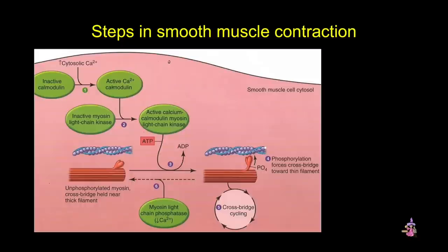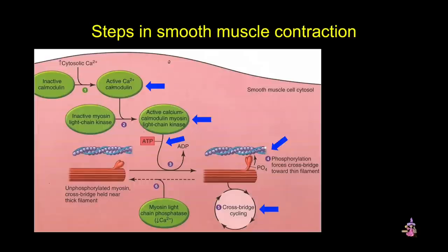Here's a cartoon showing the steps in smooth muscle contraction. First, there's an increase in cytoplasmic calcium, and that calcium binds to and activates calmodulin. Activated calmodulin then activates myosin light chain kinase by binding to it. Cross-bridge cycling can't occur until the myosin heads have been activated, and in smooth muscle the myosin light chain kinase phosphorylates myosin. As in skeletal muscle, myosin still acts as an ATPase, using it to produce a conformational change, forcing the cross-bridge toward the thin filament. The completion of the cross-bridge cycle drives contraction. As calcium levels drop, myosin light chain phosphatase dephosphorylates myosin, dissociating the actin-myosin binding and returning the cross-bridge to its resting position.